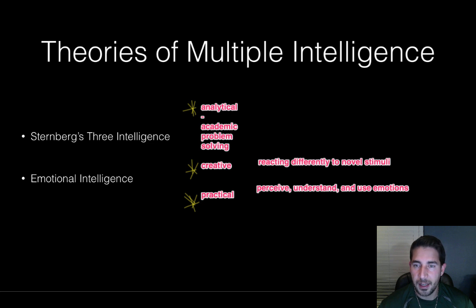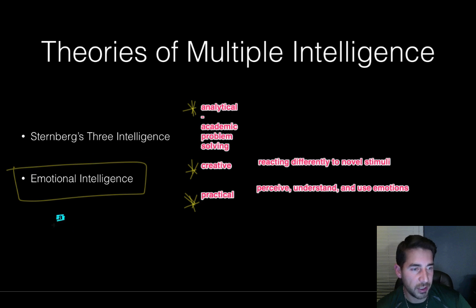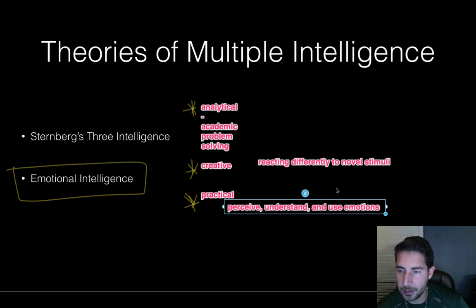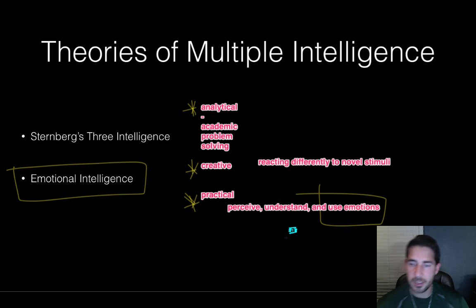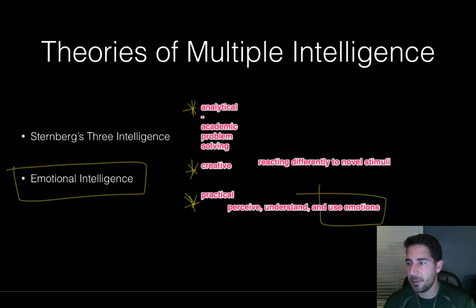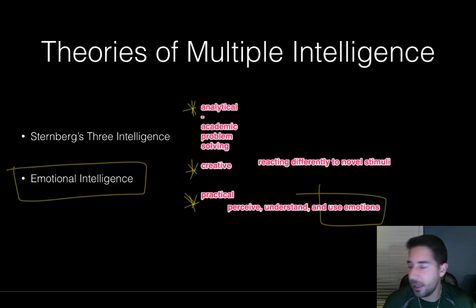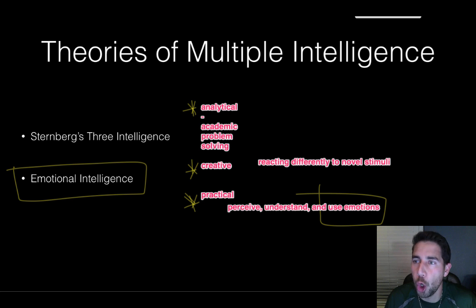Another type of intelligence that gets discussed is emotional intelligence — that's the ability to use emotions, perceive and understand them correctly. So these are the different types of intelligence. Next time we're talking about assessing intelligence — how do we get that stuff assessed? Hopefully I'll get this new system figured out and be a little more polished next time. Thanks.